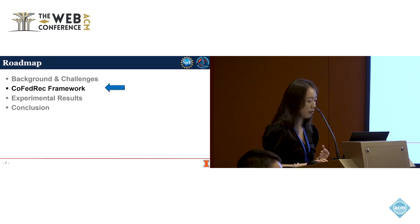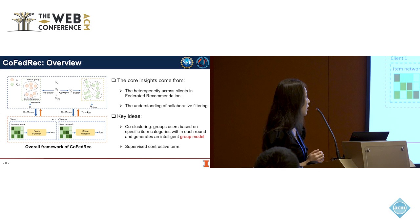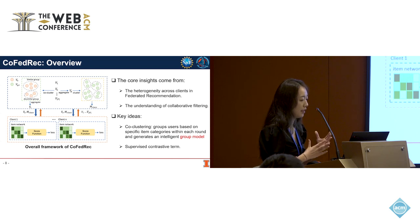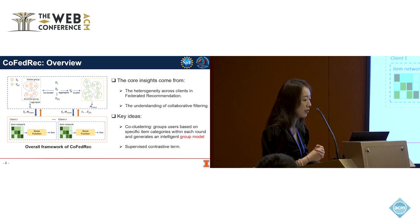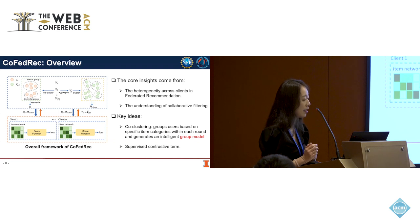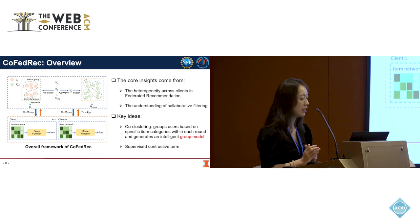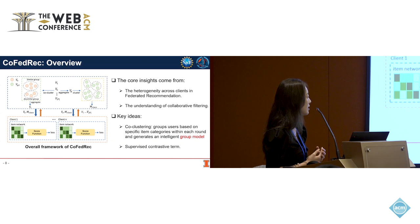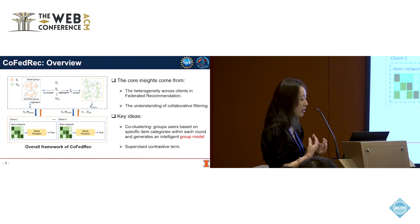The core insights of our proposed method come from, firstly, the heterogeneity across clients in a federated setting, and secondly, the idea of collaborative filtering — predicting a user's interest by collecting preferences from similar neighborhoods. The key solution is to group users based on a specific item category within each communication round and generate an intelligent group model containing collaborative information from similar users. This allows us to transfer beneficial knowledge incorporating collaborative steps while protecting user privacy. We also introduce a supervised contrastive term into the local training process to ensure that locally learned item representations retain global insights.